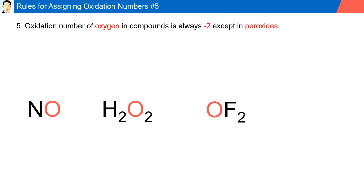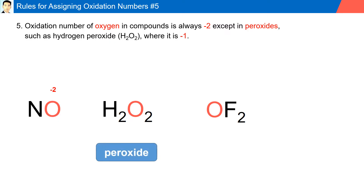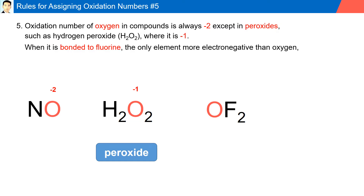Rule number five: the oxidation number of oxygen in compounds is always minus two, except in peroxides such as hydrogen peroxide (H₂O₂), where it is minus one. In NO, oxygen has an oxidation number of minus two. In the peroxide H₂O₂, oxygen has an oxidation number of minus one. When oxygen is bonded with fluorine — the only element more electronegative than oxygen — the oxidation number of oxygen is positive. In OF₂, the oxidation number for oxygen is plus two.